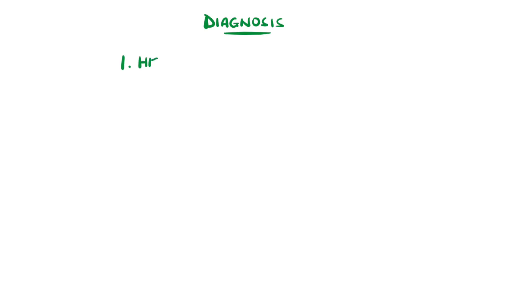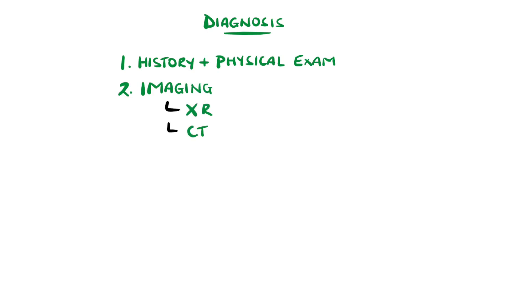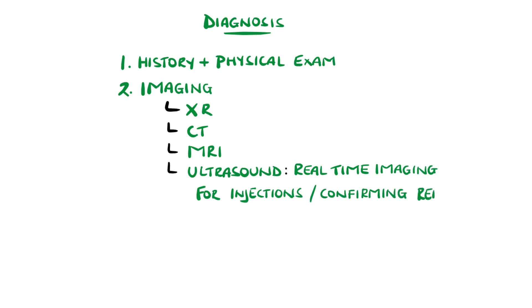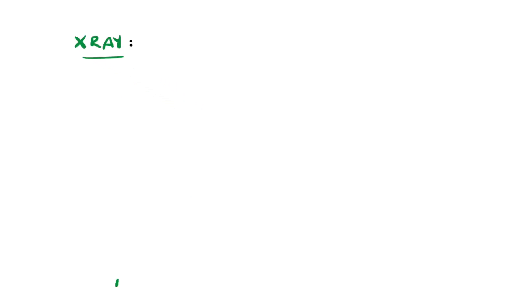In most cases, the diagnosis is made on the history and physical exam combined with imaging, in particular X-rays. Although CT and MRI can be done in some cases to look at soft tissue injuries or subtle fractures, and even ultrasound can be used as a point-of-care form of imaging that can provide real-time imaging to help with medication administration and to confirm reduction. X-rays generally include an anterior-posterior or AP view and a lateral view at minimum.